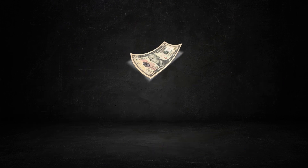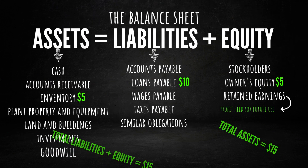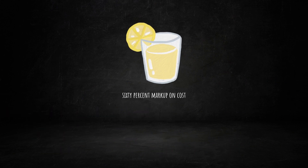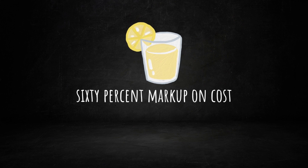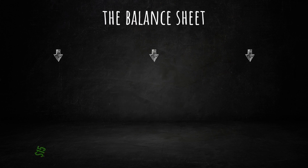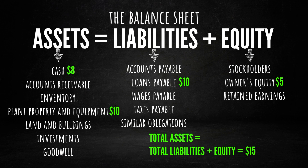Continuing our journey, I proceed to spend $10 on a lemon squeezer, reducing my cash by the same amount and increasing my equipment by $10. Let's assume I sell the first batch of lemonade at a 60% markup on cost, generating $8 in sales. Although I no longer possess any inventory, my cash balance increases by $8, resulting in a small profit of $3. This profit arises from subtracting the cost of lemons, which was $5, from the sales revenue of $8.